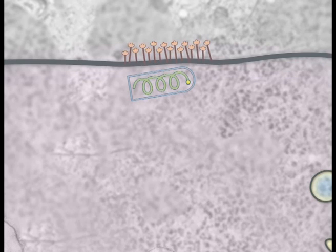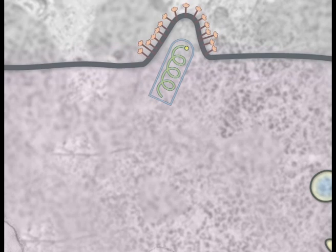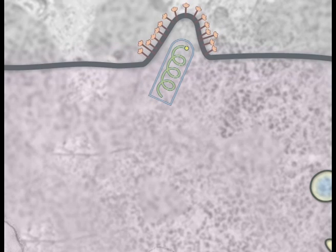At the site of budding, M interacts with the nuclear capsid and with the intracytoplasmic tail of the G trimers. The creation of this complex is an important step in virus assembly. What follows is release of the budding virion. The released virions are ready to infect new cells.